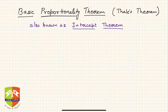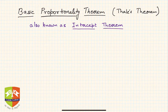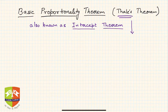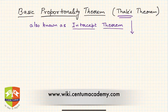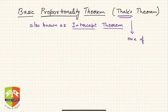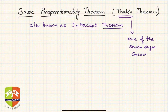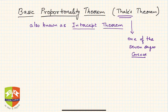Hello friends, welcome again to another session on similar triangles. Today we are going to learn one of the very important theorems in all geometry — the Basic Proportionality Theorem, also named after Thales. He was a pre-Socratic philosopher who existed before Socrates in Greece, and he is also considered one of the Seven Sages of Greece. He was a scholar and philosopher who gave many mathematical theorems, especially in geometry.